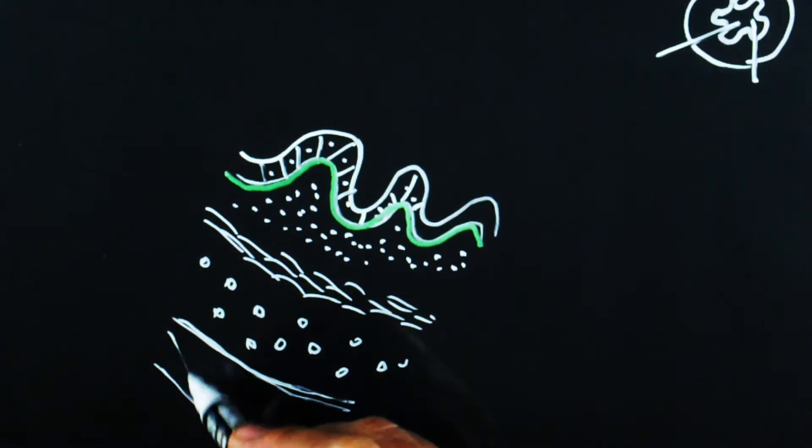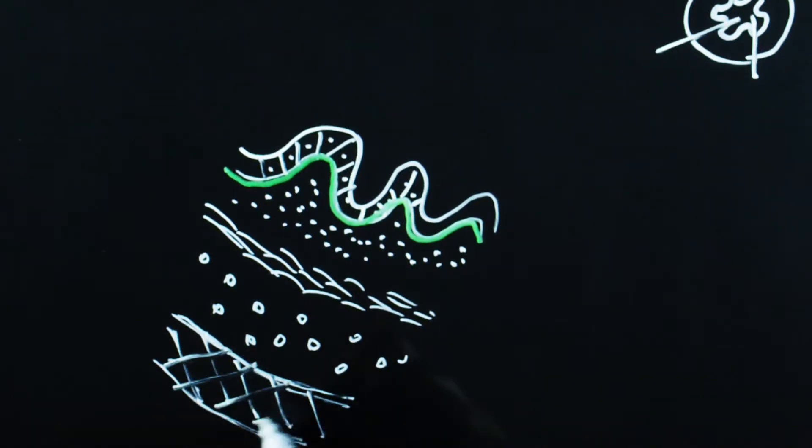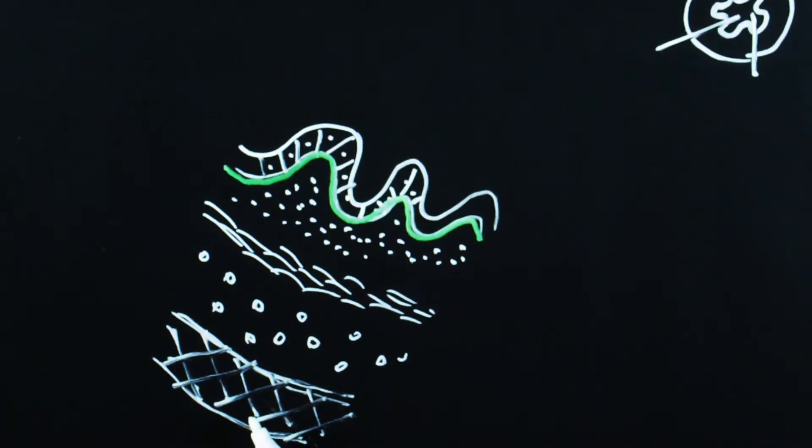And finally, we show the muscularis propria, shown here as a single block of muscle. Although in reality, this has two layers, the longitudinal and circular layers.